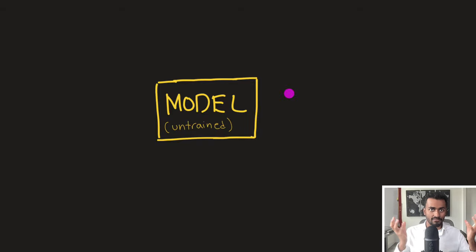Quiz time! In LoRA, what exactly is the low rank R referring to? A: The number of neurons in the bottleneck layer of additional task-specific feed-forward layers. B: The number of neurons added to each attention layer. C: The number of neurons added for each additional specific task. Or D: None of the above. Note that multiple answers may be correct. I'll give you a few seconds. The correct answer is A. But can you tell me why? Give your reasoning in the comments below and let's have a discussion. If you think I deserve it, please do consider giving this video a like.